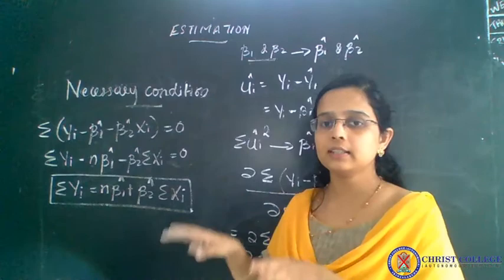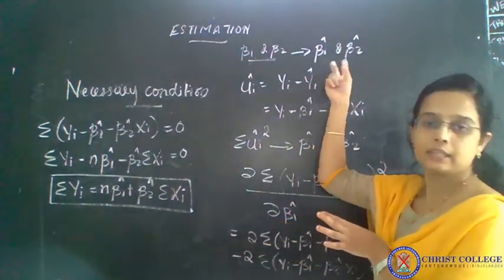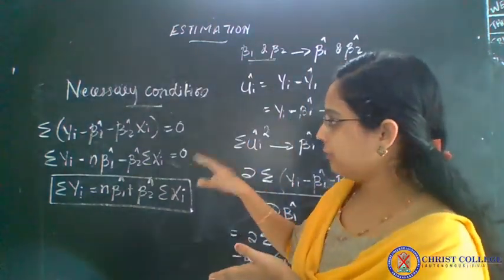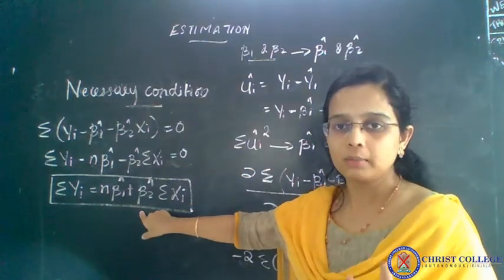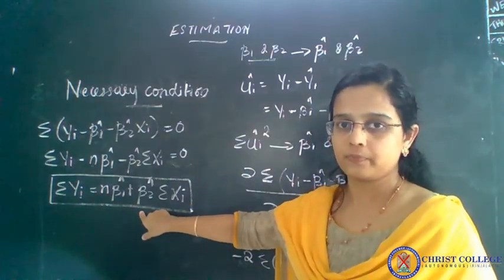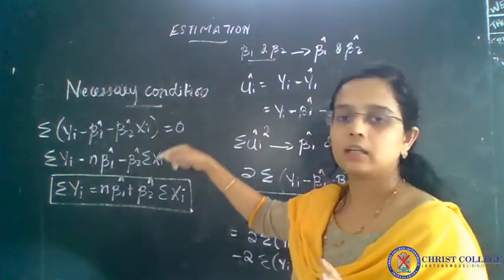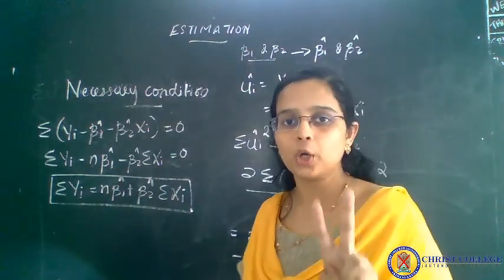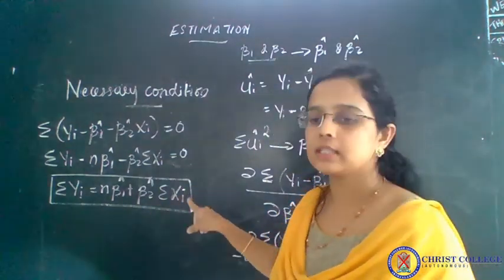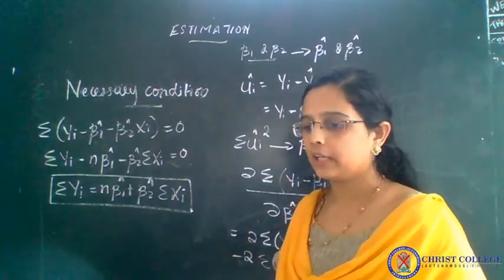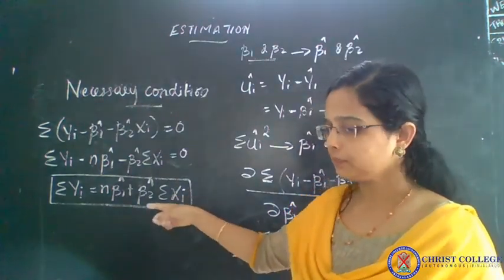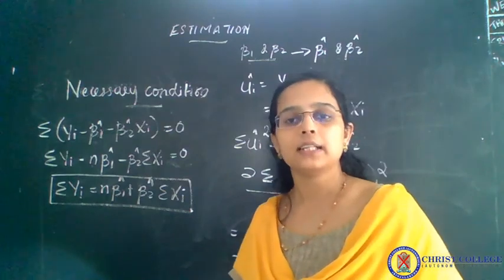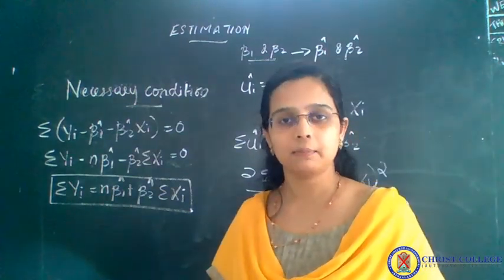We are proceeding with the steps for finding out beta 1 hat and beta 2 hat. For that, we need two normal equations. By using this necessary condition or first order condition, we can find out two normal equations, and this one — sigma y_i equals n beta 1 hat plus beta 2 hat sigma x_i — is the first normal equation.